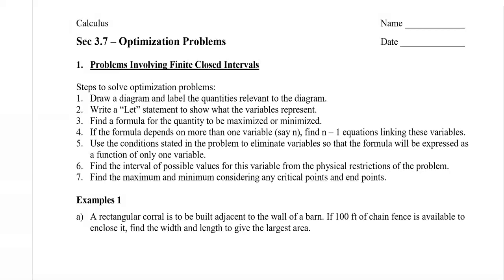Use the conditions stated in the problem to eliminate variables so that the formula is expressed as a function of only one variable. Also find the interval of possible values for this variable based on the physical restrictions of the problem, so you don't choose a value that's too large or too small. Then find the maximum or minimum by considering critical points and endpoints.